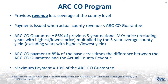Now we'll discuss the basics of the ARC County program. The ARC County program provides revenue loss coverage at the county level. Payments are issued when actual county revenue is less than the ARC County guarantee. The ARC County guarantee is equal to 86% of the previous five-year Olympic national marketing year average price, multiplied by the five-year Olympic average county yield. The ARC County payment is equal to 85% of the farm's base acres times the difference between the ARC County guarantee and the actual county revenue. The maximum payment is equal to 10% of the ARC County guarantee.